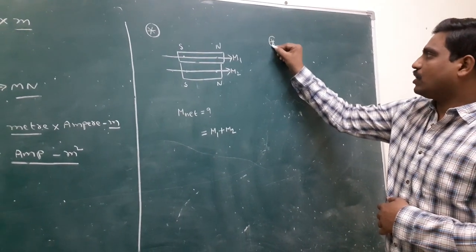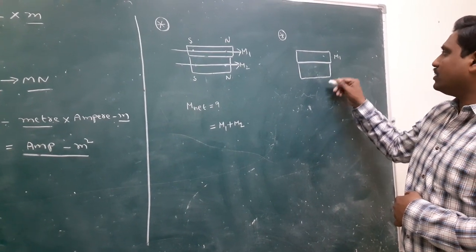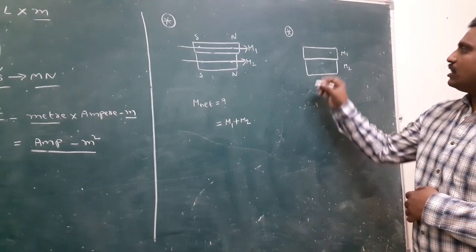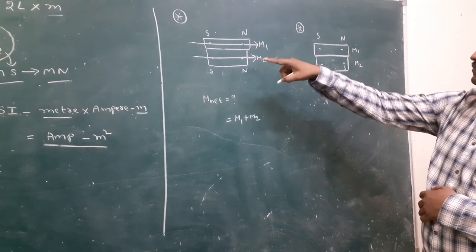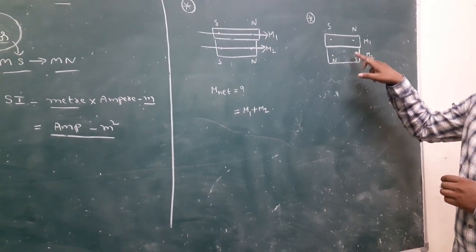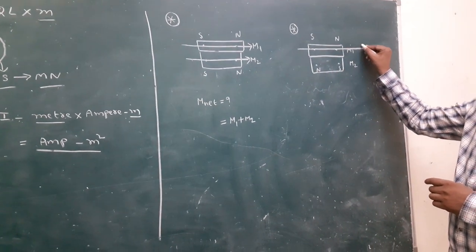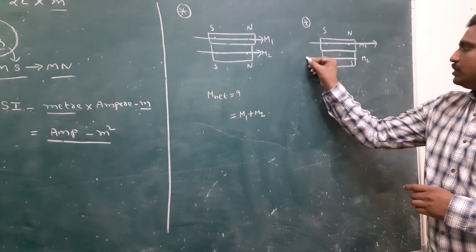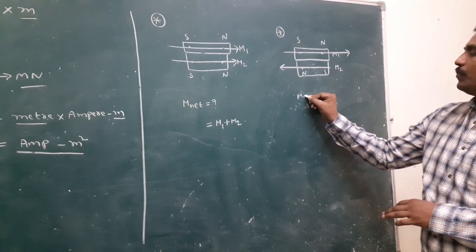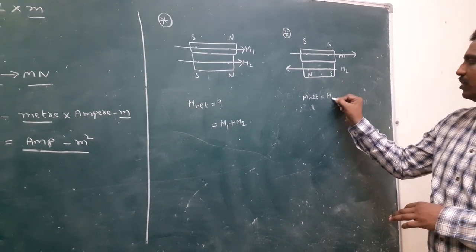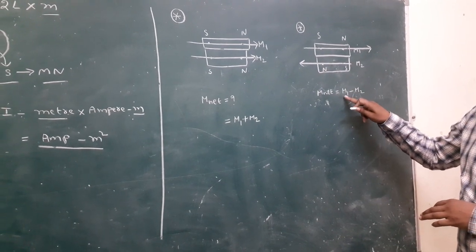Here is another diagram. In this case, for the first magnet this pole is south and this pole is north. For the second magnet, this is north and this is south. So the magnetic moment directions are south to north for each magnet. But according to this diagram, M1 and M2 are in opposite directions. According to vectors, opposite direction means subtraction — so the resultant is M1 minus M2.